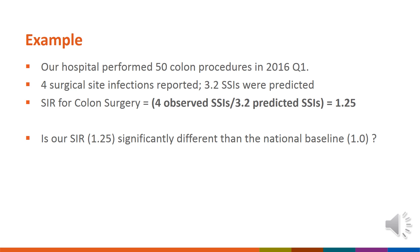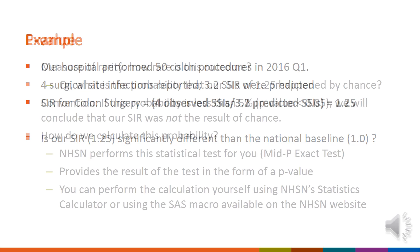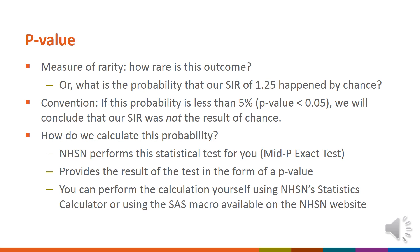The hospital wants to know whether that SIR of 1.25 is significantly different than the national baseline of 1. We measure statistical significance using p-values, which tell us about the rarity of the data. In our earlier example, a p-value would give us the probability that our SIR of 1.25 happened by random chance alone.